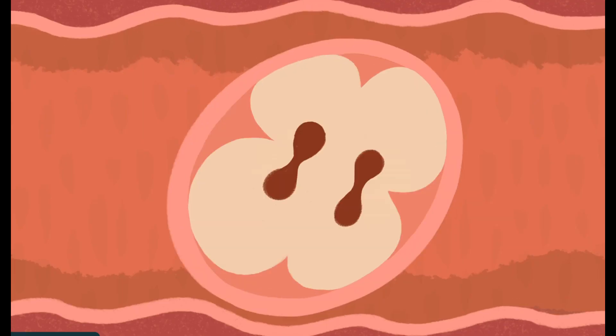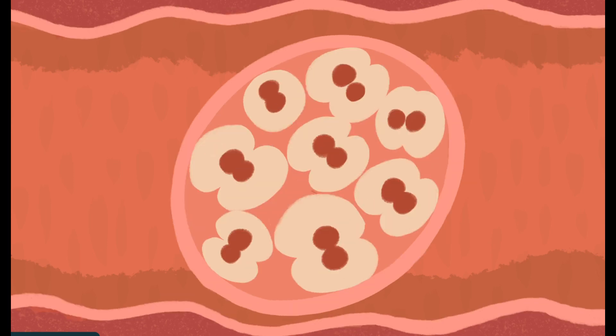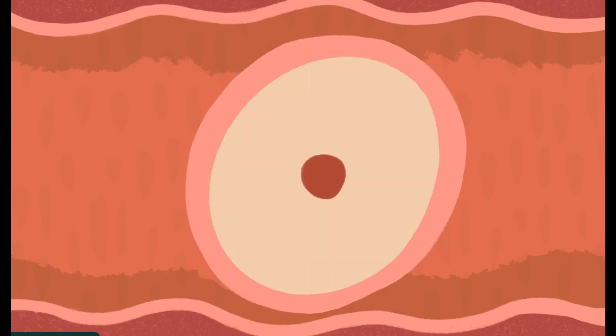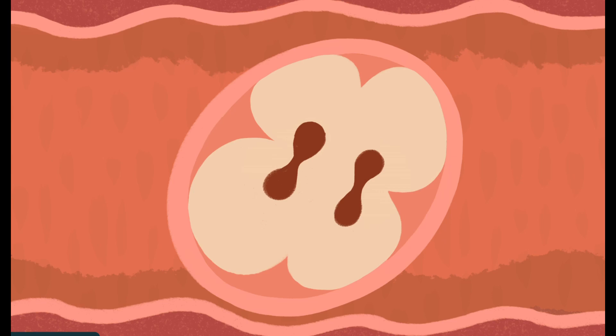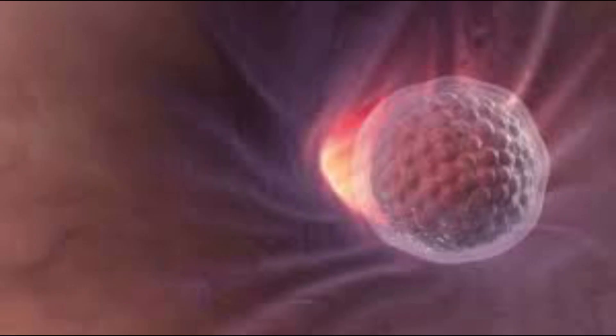This is the first cell that gives rise to a new life, a new human being, and it is called the zygote. The zygote starts growing fast, dividing into many cells as it travels through the fallopian tube for five days with the help of movement of the fallopian tube.